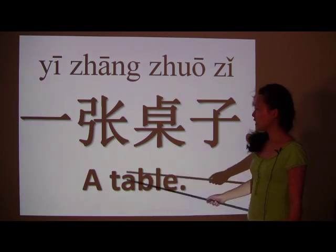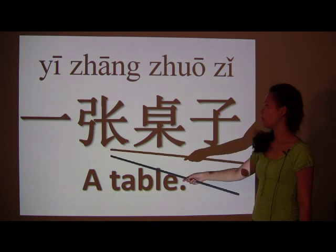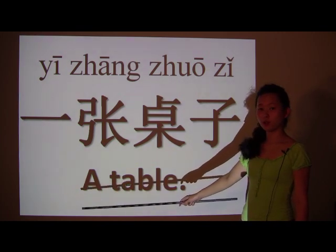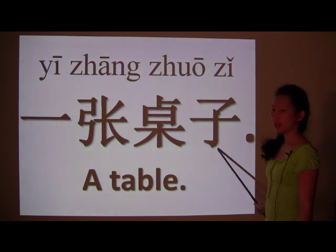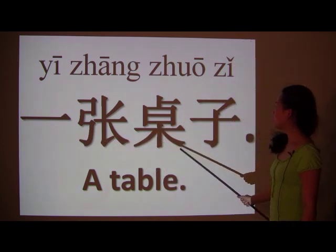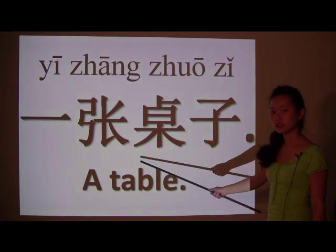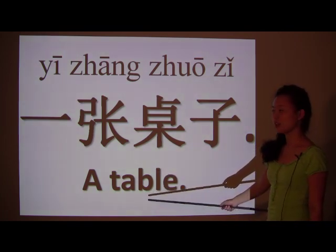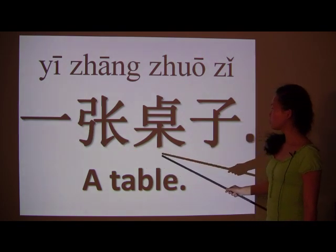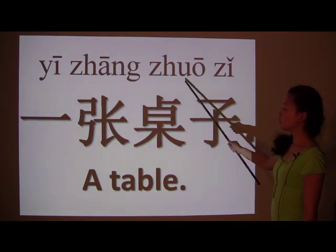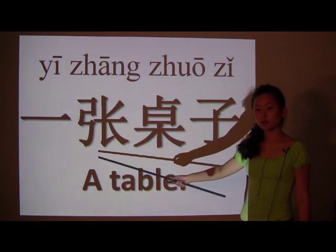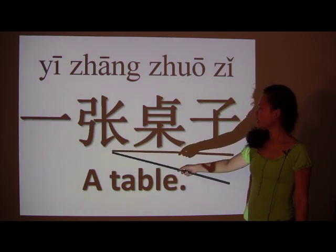Now, this same article also works for furniture. So if you say a table — 'a' still refers to one, so you don't need to change the number. The only thing that changes is the item you're talking about. Together, you have 一张桌子. 桌子 — these two characters mean table in Chinese. So you are literally saying a table. 张 refers to furniture as well as paper.